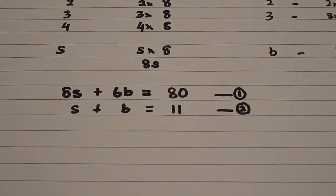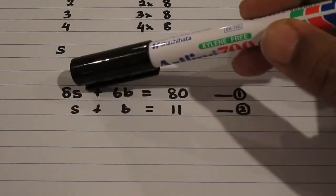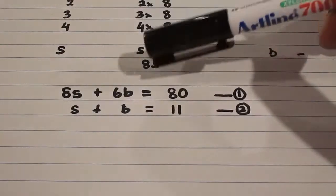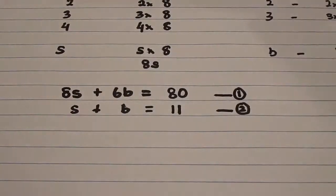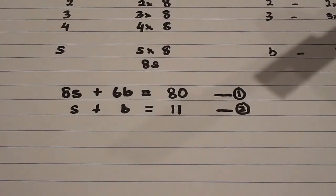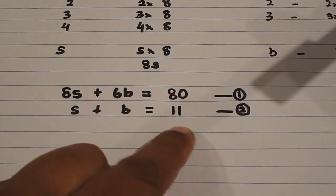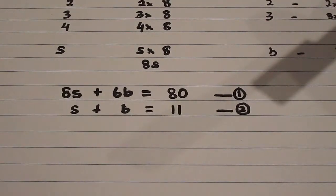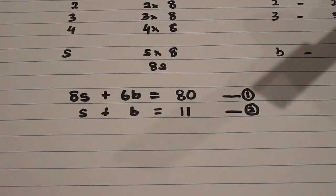Now if you look at these equations carefully, you will see that there is 8s here and one s here, 6b here, one b here. So what you want to do is just have one equation with one variable which you can then solve. There are a lot of ways to do this, but what we will do here is a general way.